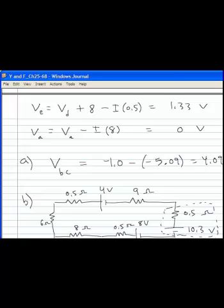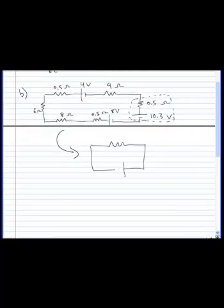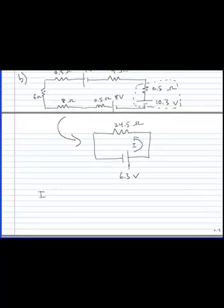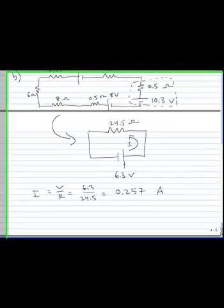Okay, I'm going to put in my answer here. I get a battery that's putting the current in the counter-clockwise direction, 6.3 volts, 24.5 ohms is my net resistance. So the current then in this circuit is V over R, 6.3 over 24.5, 0.257 amps, and it's going in the counter-clockwise direction.